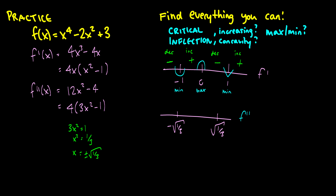For f double prime of x: taking x = −5 gives a positive value; taking x = 0 gives 4 times negative 1, which is negative. And taking x = 5 gives a large positive number. So where the second derivative is positive we have concave up, and where it's negative we have concave down. We have now found everything we need to.